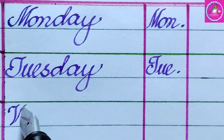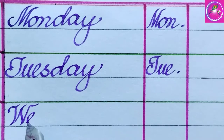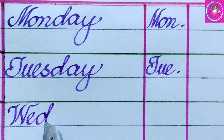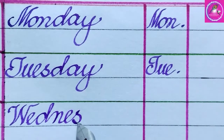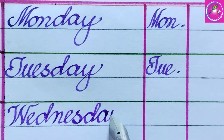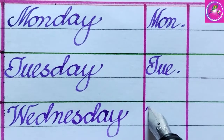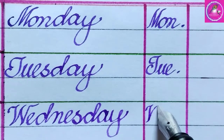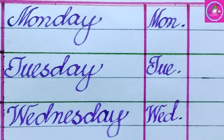Wednesday: W, E, D, N, E, S, D, A, Y. Wednesday. The short form of Wednesday is Wed.